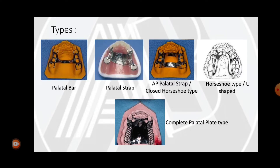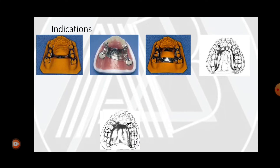The types of maxillary major connector are: palatal bar, palatal strap, anterior-posterior palatal strap (also called the closed horseshoe type), horseshoe type or U-shaped major connector, and complete palatal plate type.